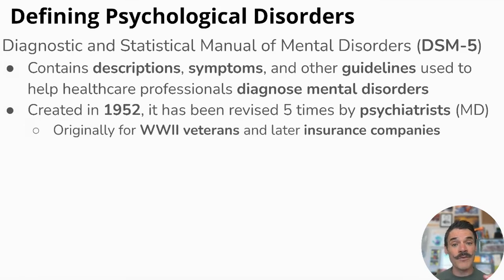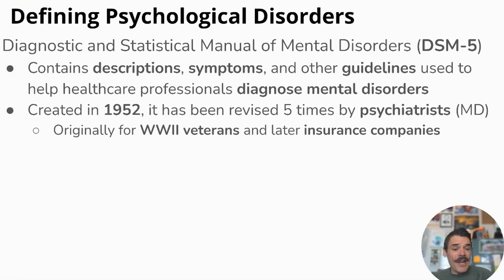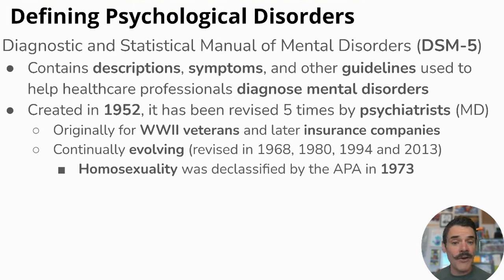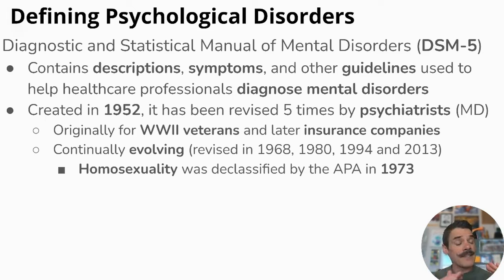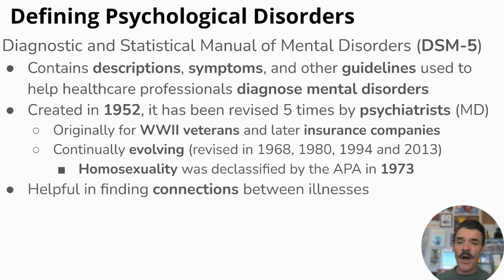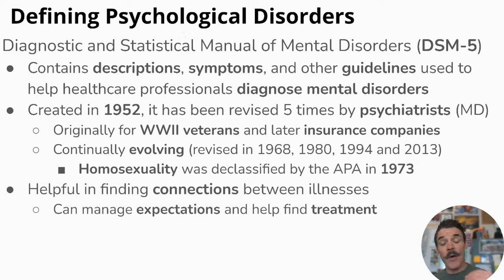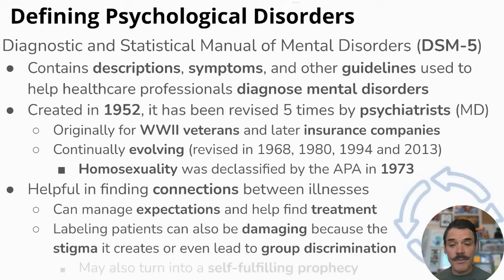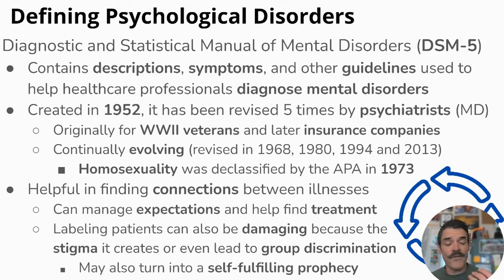Originally the DSM was created for World War II veterans and later for insurance companies — if they're going to pay for treatment, they want clear criteria for what is and isn't a mental disorder. It's continually evolving; for example, homosexuality was declassified by the APA in 1973. It's less about adding and deleting and more about recategorizing — OCD used to be an anxiety disorder but now has its own category. This helps find connections between illnesses and manage patient expectations, but negatives include stigma, negative stereotypes, group discrimination, and self-fulfilling prophecy for patients.